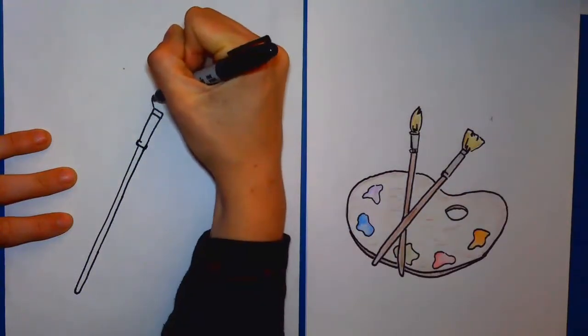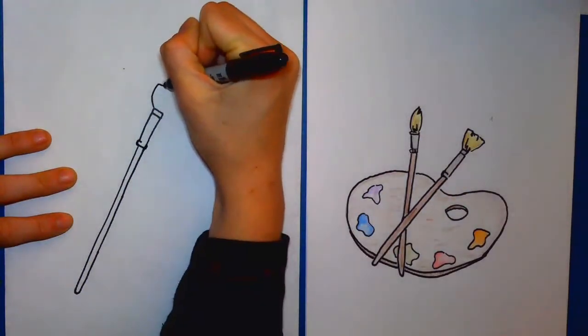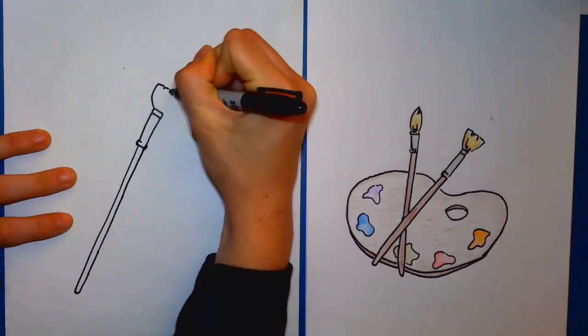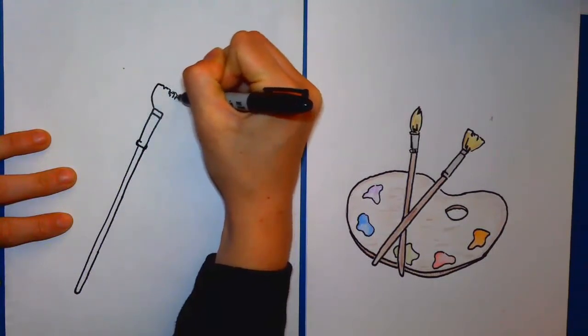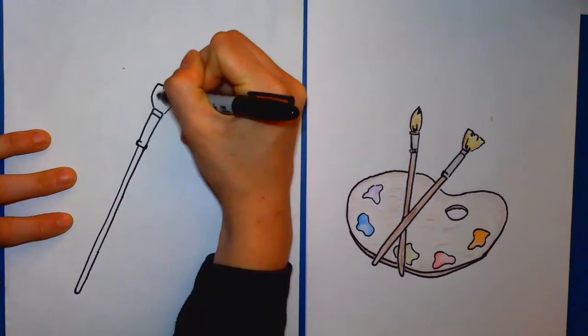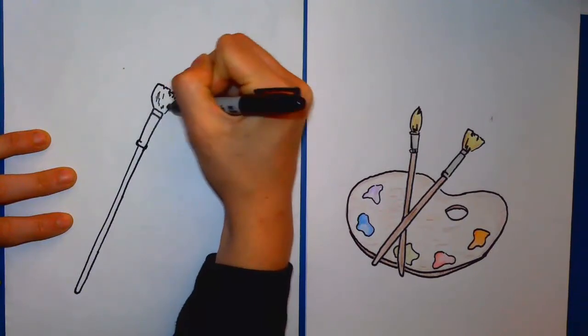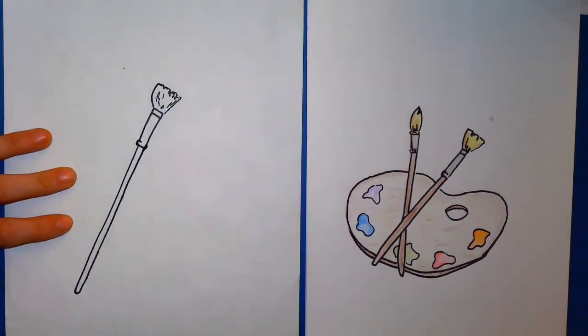So after that, you're going to do a curved line up, straight line over, and then just add some thicker lines to help it look more like bristles. Just light touches with your pencil or your marker.